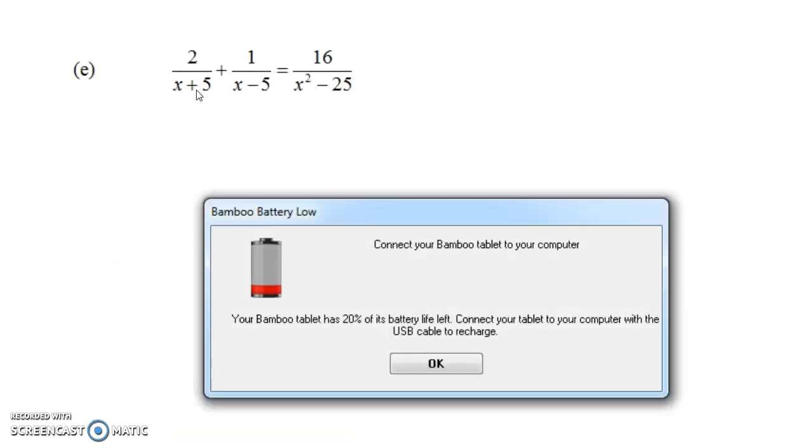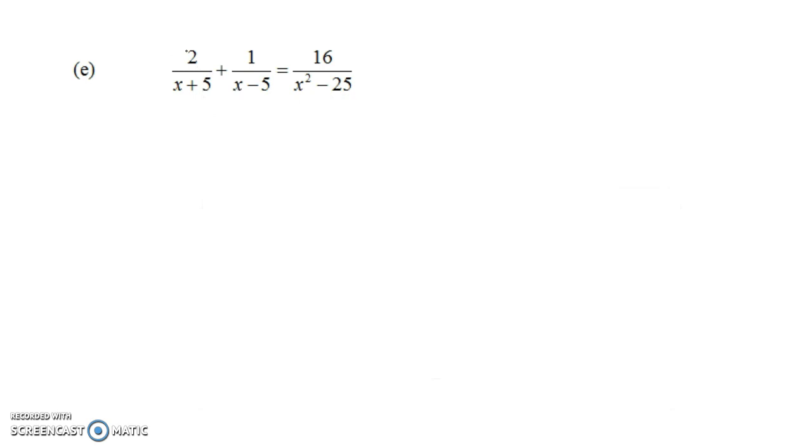Now we have an equation that 2 over x plus 5 plus 1 over x minus 5 equals 16 over x squared minus 25. We could try to multiply both sides of this equation by x plus 5 times x minus 5 times x squared minus 25, but I think that's a little bit overkill because the x squared minus 25 is a difference of squares. It can be factored to x plus 5 times x minus 5.